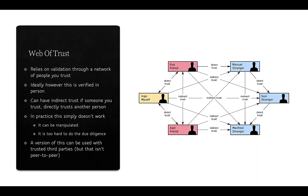The web of trust relies on validation through a network of people you trust, and ideally this is verified in person when you exchange public keys. You can have indirect trust if someone you trust directly trusts another person, but in practice this really doesn't work well — it can be manipulated very easily and it's too hard to do the due diligence.